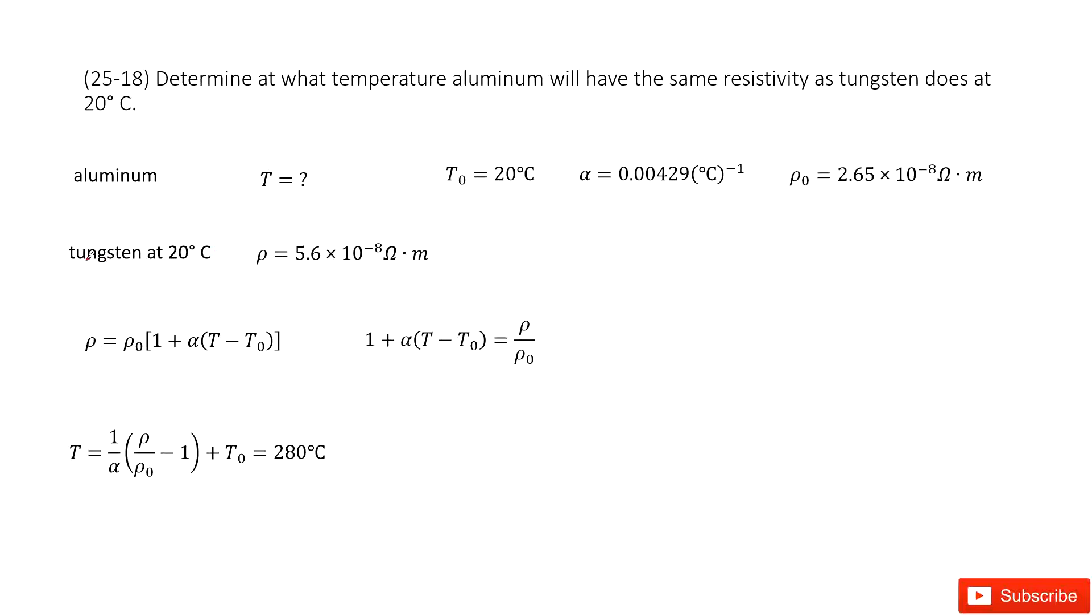It tells you that we can check the textbook for the resistivity for tungsten at 20 degrees. We write it down: 5.6 times 10 to the power negative 8.